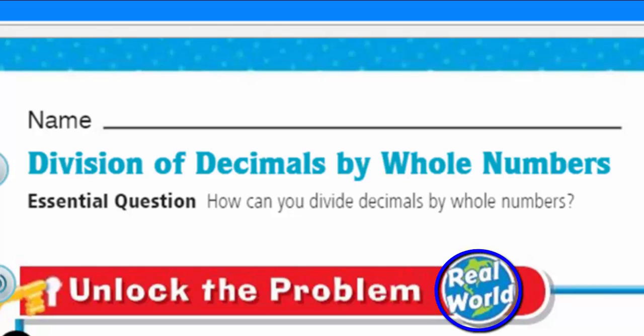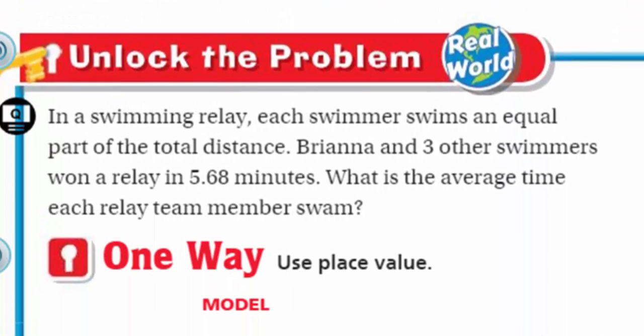That's right my friends. We're talking real world, baby. Real world problems here. Let's do it! It says in a swimming relay, each swimmer swims in equal part of the total distance. Brianna and three other swimmers won a relay in 5.68 minutes. What is the average time each relay team member swam? Okay, you know what? I'm liking this. Well, I need to understand and maybe unpack the problem. Take it apart. Slow it down in slow motion, my friend.